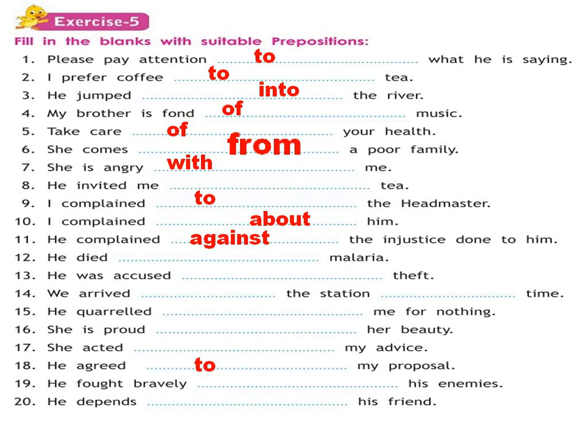He died of malaria — because we are talking about his death and the reason. He was accused of theft — accused means charged of. We arrived dash station — 'at station'. Why 'at'? Because 'in' means he has already reached inside the station, but 'at' means he could be outside or inside. When we are not sure, we use 'at'.